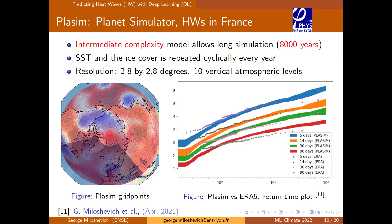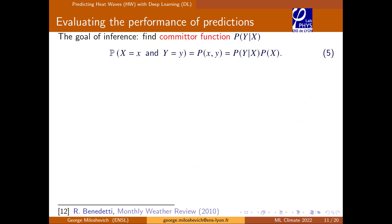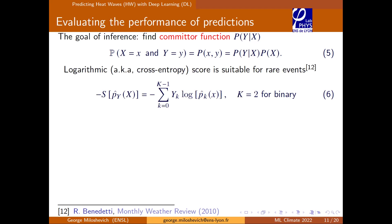We're interested in finding the conditional probability of detecting a heat wave given some condition x. The score we find most adapted is the logarithmic score — known as cross entropy in machine learning — which is suitable for rare events because of its logarithmic dependence and sensitivity to small probabilities. I write it here in general for multi-class classification, but k equals two for our binary classification case.